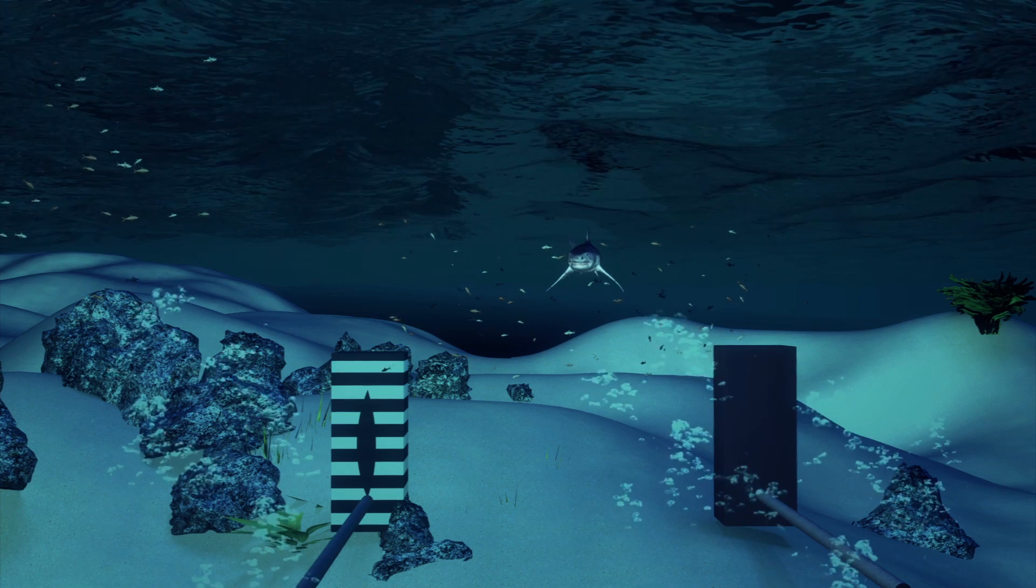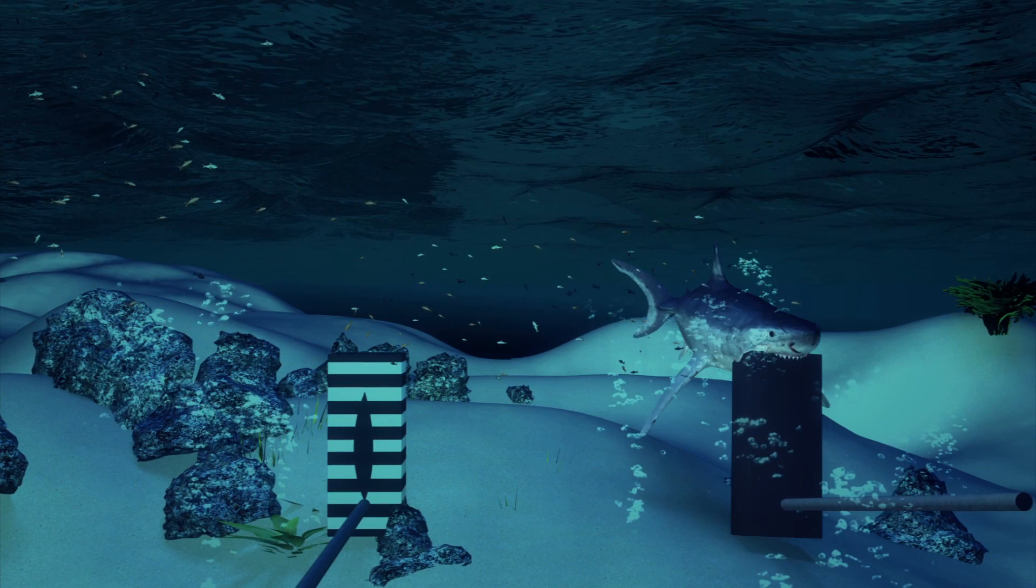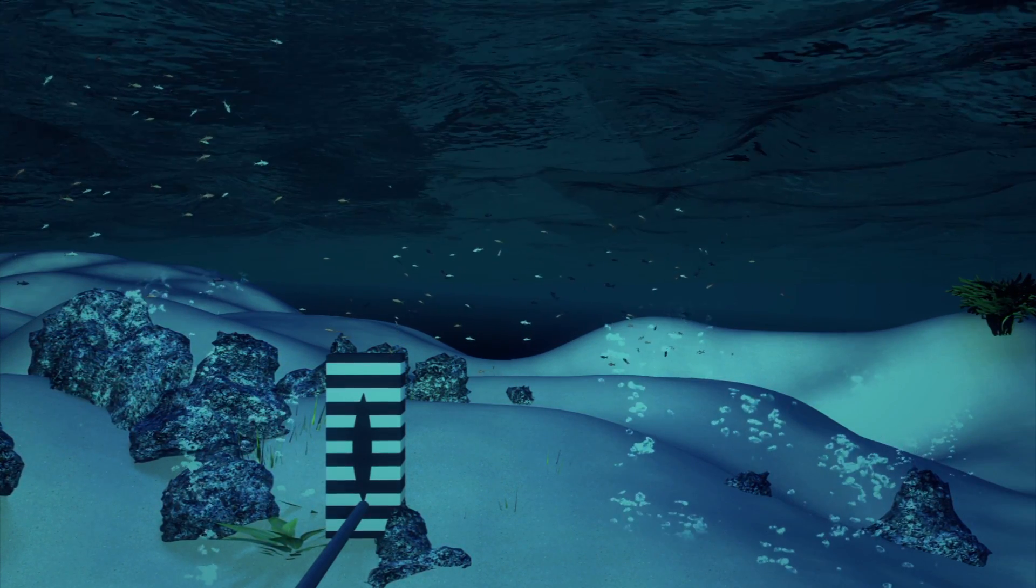In tests, sharks steered clear of the black and white striped test object, but would hone in on the all black object resembling the traditional all black wetsuit.